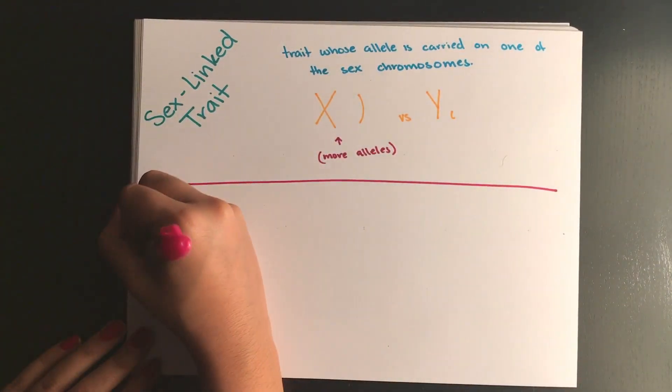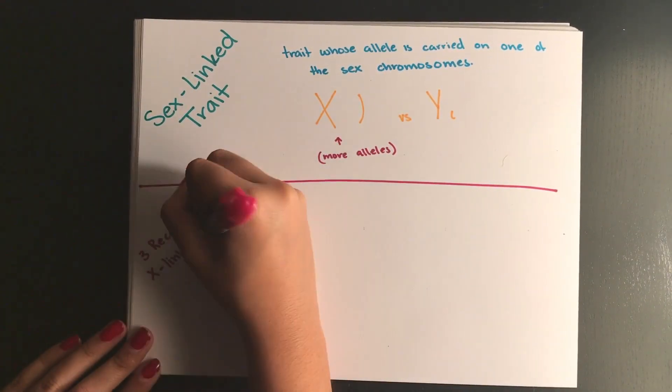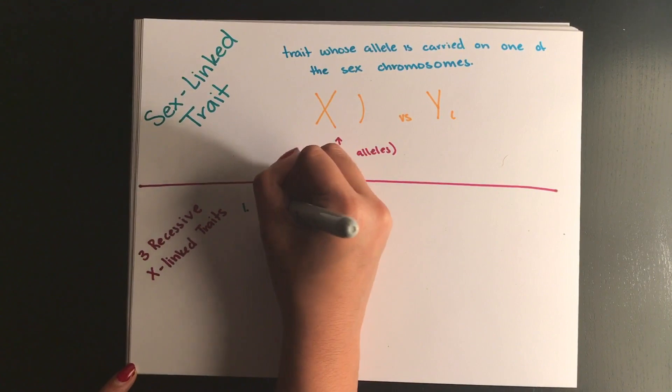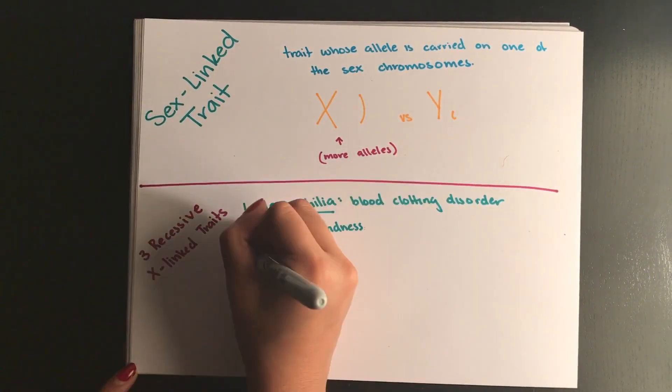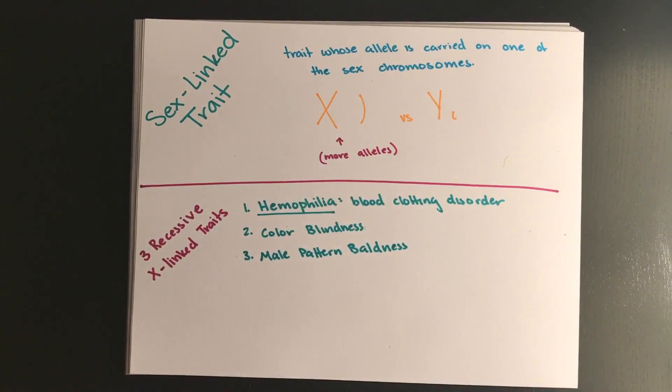There are three X-linked traits you should know for the exam. The first one is hemophilia which is a disorder of blood clotting. The second one is colorblindness and the third is male pattern baldness.